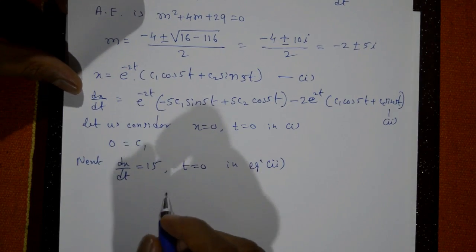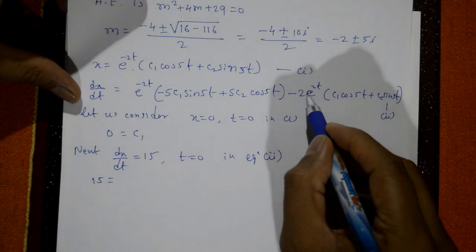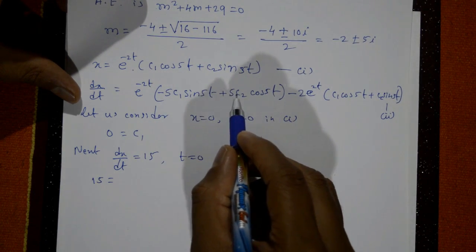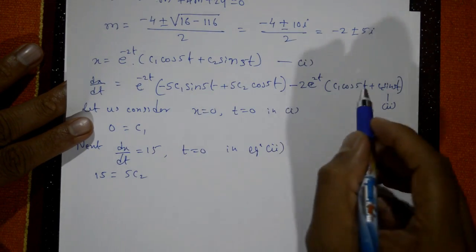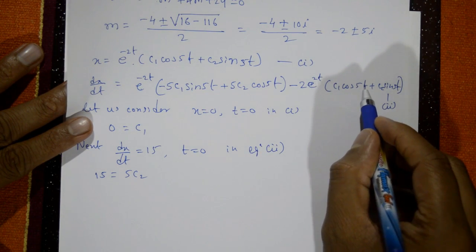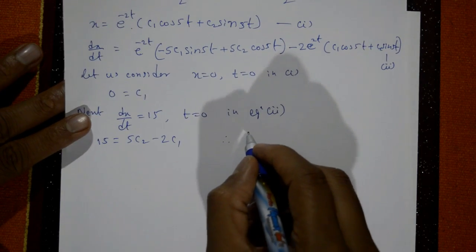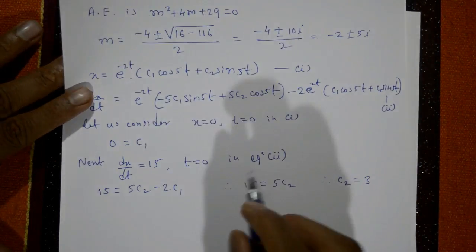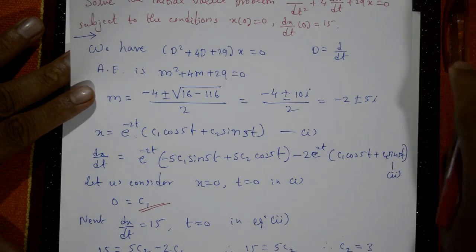Apply condition dx/dt = 15 at t = 0 in equation number two. Substituting: 15 = e^0(−5c₁ sin 0 + 5c₂ cos 0) − 2e^0(c₁ cos 0 + c₂ sin 0) = 5c₂ − 2c₁. Using c₁ = 0: 15 = 5c₂, so c₂ = 3.